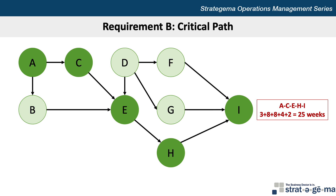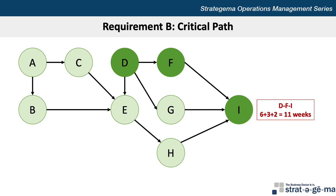Our second path is A-C-E-H-I with task times of 3, 8, 8, 4, and 2 weeks respectively, summing up to a total path time of 25 weeks. A third path through the network is D-E-H-I with task times of 6, 8, 4, and 2 weeks respectively, for a total of 20 weeks. A fourth path is D-F-I with times of 6, 3, and 2 weeks for a total of 11 weeks. And the last path through the network is D-G-I with times of 6, 5, and 2 weeks for a total of 13 weeks.